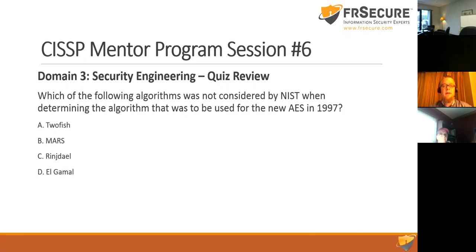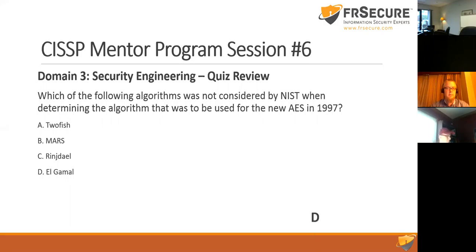Question nine: Which algorithm was NOT considered by NIST when determining the AES algorithm in 1997? Options: Twofish, MARS, Rijndael, and ElGamal. MARS and Rijndael were considered; ElGamal is an asymmetric encryption algorithm and was not considered for AES — that's the correct answer.